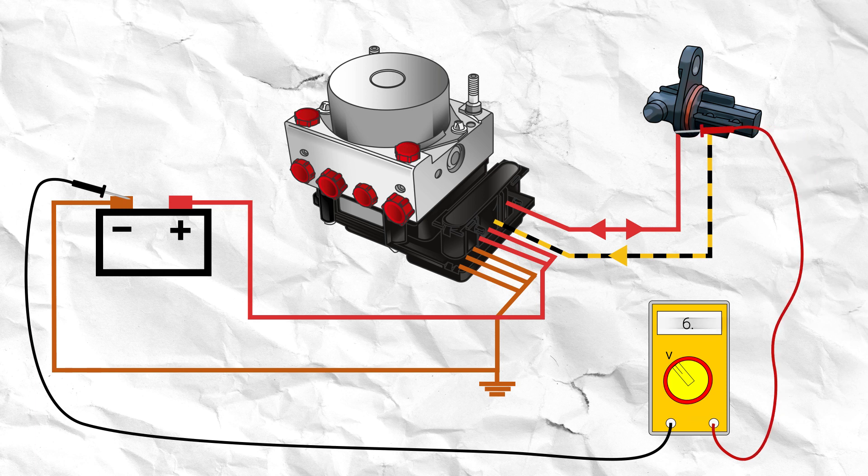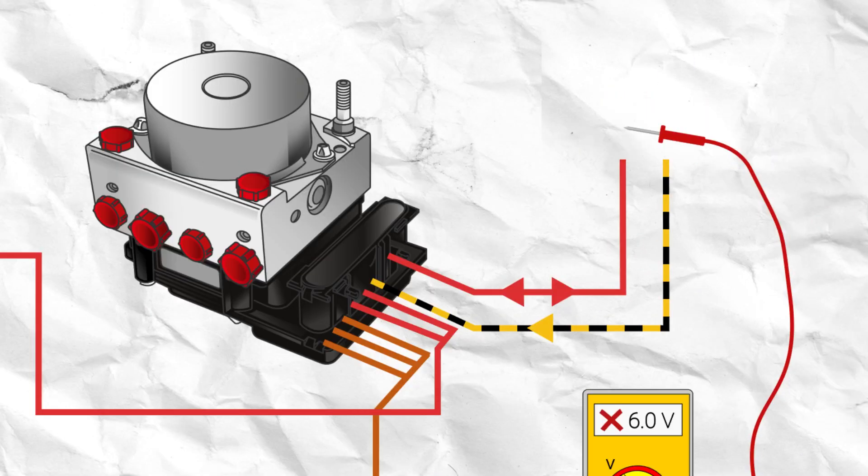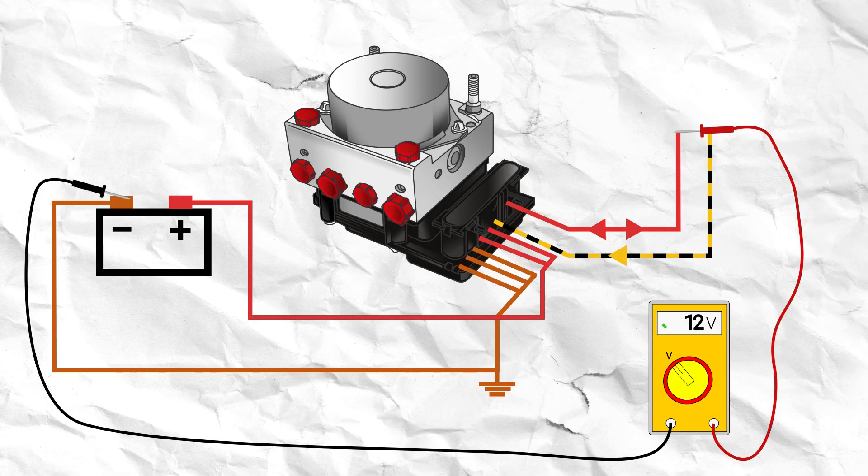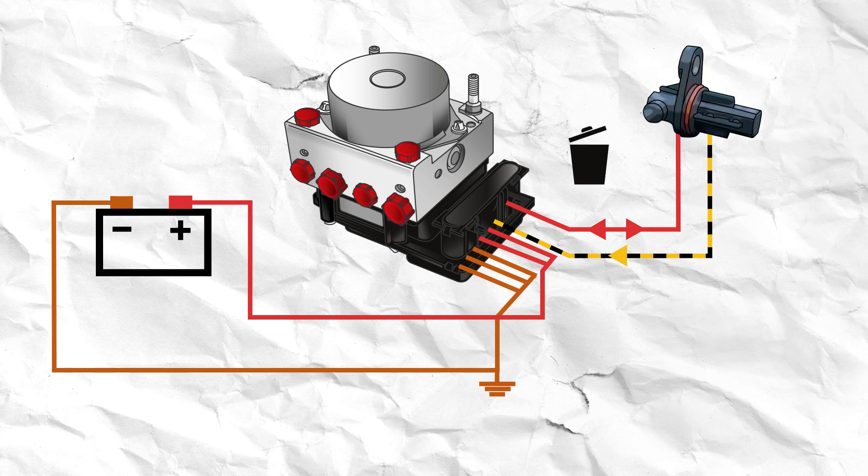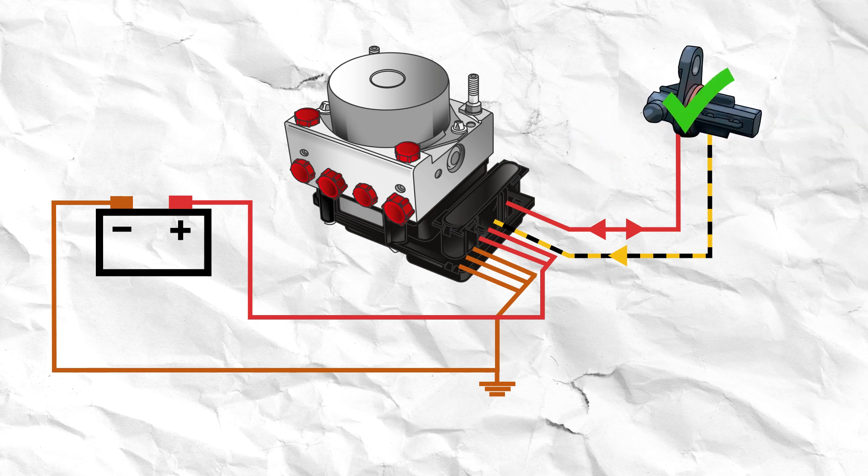In the condition that these feeds are not present, unplug the sensor itself and check for the voltages at the loom end once more. If they are present on this test, then you have a faulty wheel speed sensor. Replace this and you should be good to go.